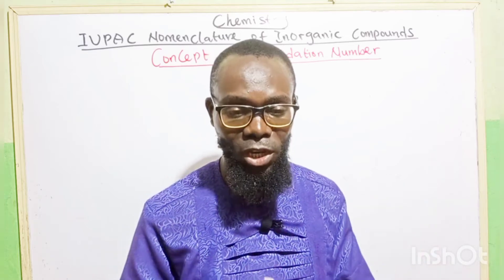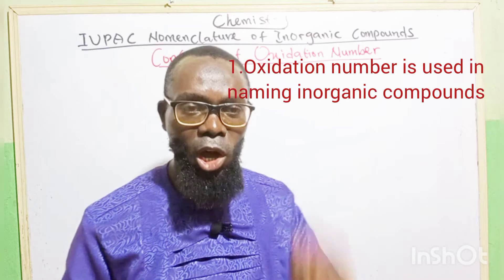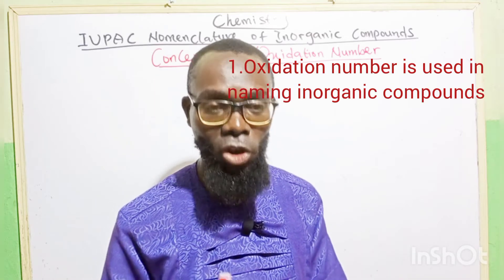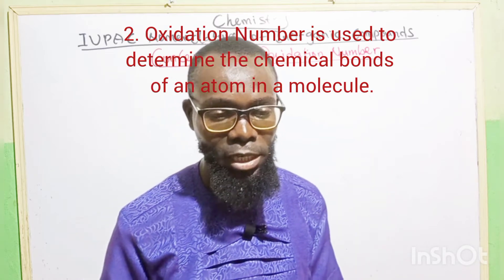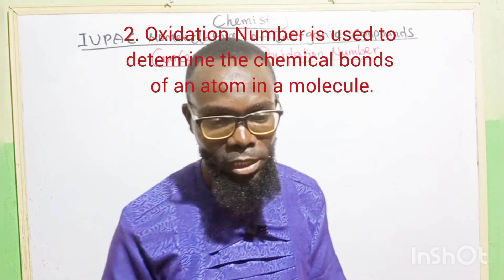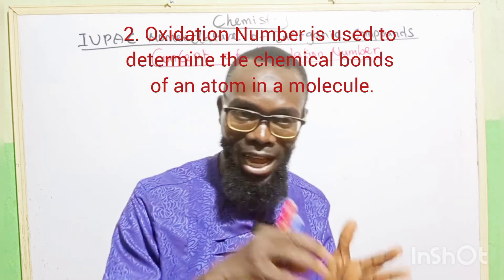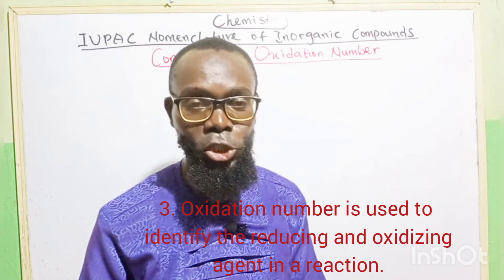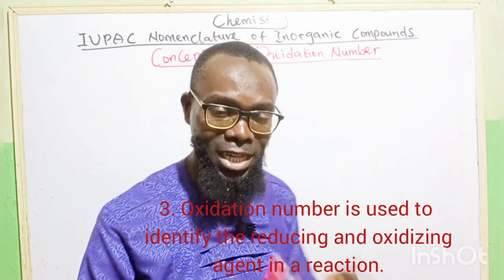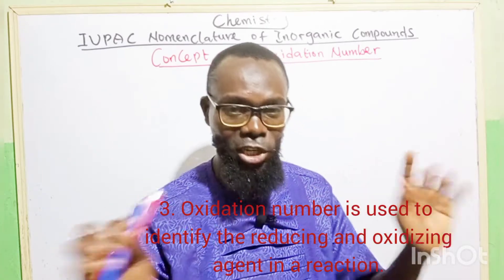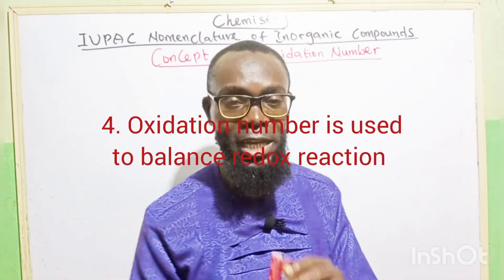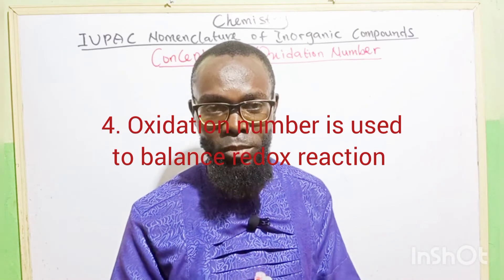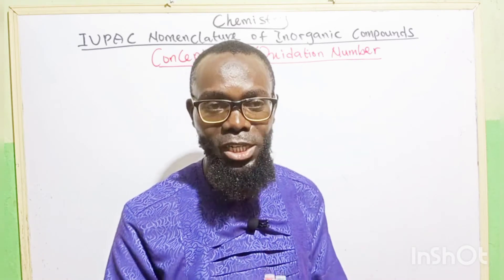What is the importance of oxidation number? One, oxidation number is used in naming inorganic compounds. Two, oxidation number is used to determine the chemical bond of an atom in a molecule. Three, oxidation number is used to identify reducing and oxidizing agents in a redox reaction. And four, oxidation number is used in the balancing of redox reactions, which we are going to look at very soon.